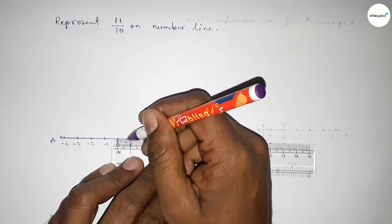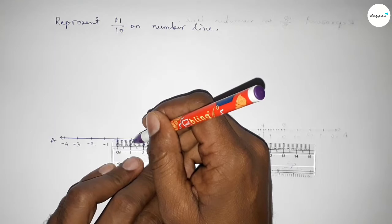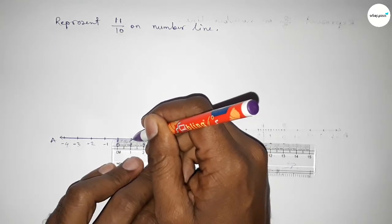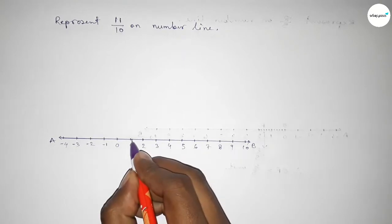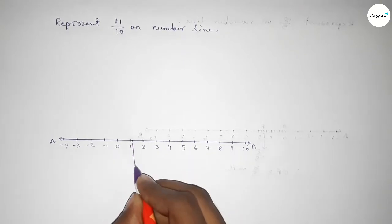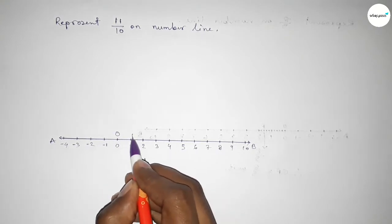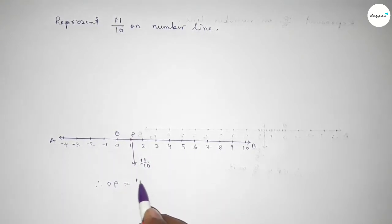So this is 0.1, 0.2, 0.3, 0.4, 0.5, 0.6, 0.7, 0.8, 0.9, this is 1.1 or 11 over 10 on number line. So this is 11 over 10 or 1.1 on number line. So O and P, therefore OP equal to 11 over 10 unit.